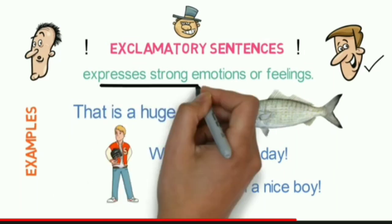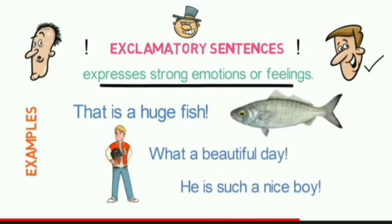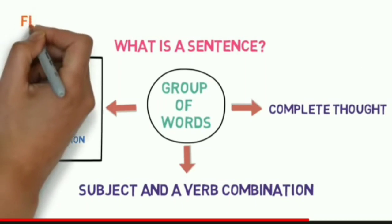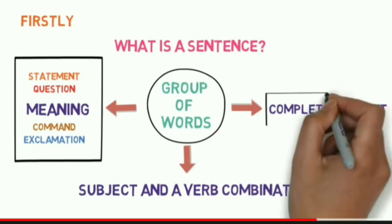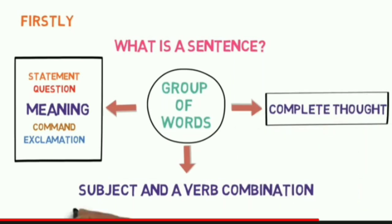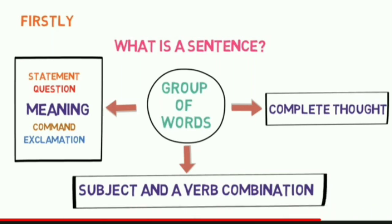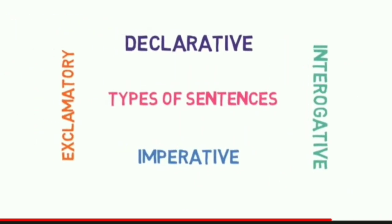That's all about sentences. Let's quickly revise what we have learned. A sentence is a group of words with three characteristics: it describes a complete thought, it must have a subject and a verb — though sometimes the subject may be implied — and every sentence may have a different meaning and thought to convey.